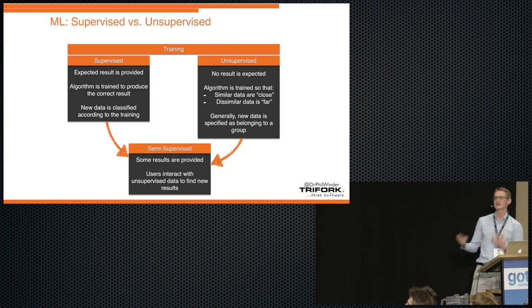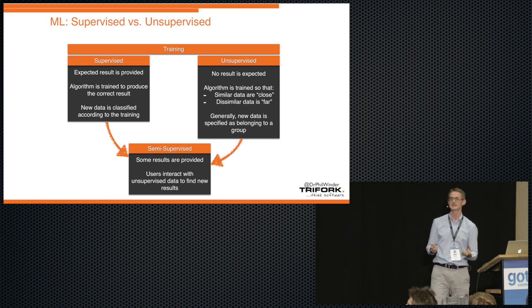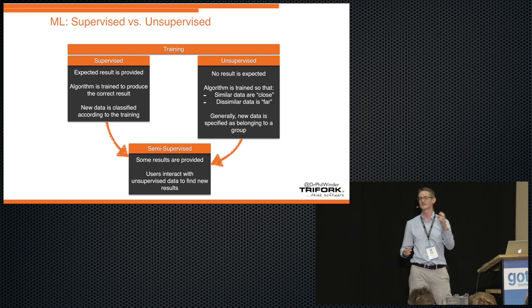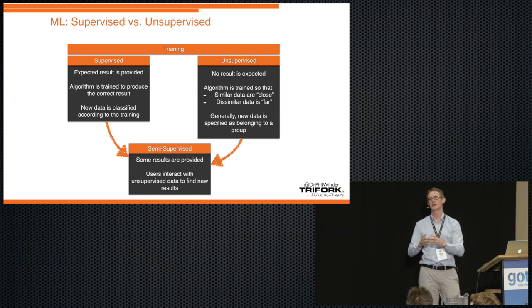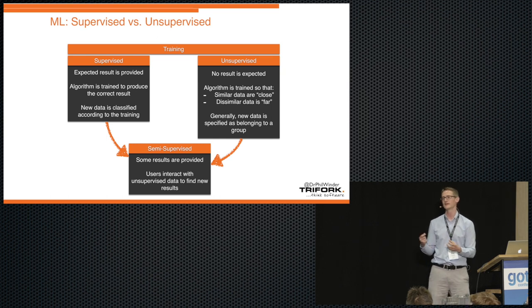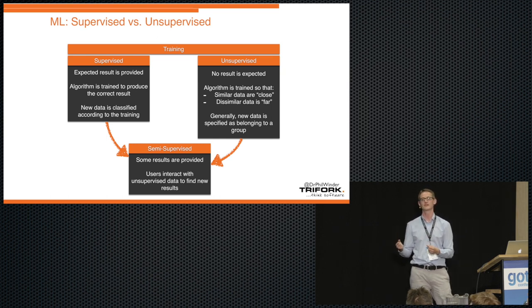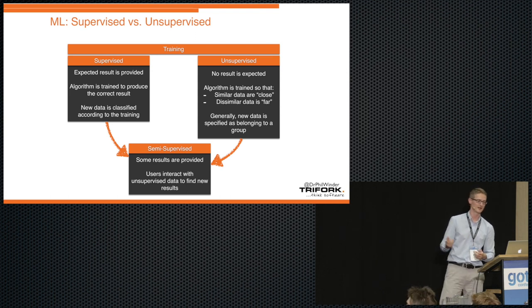We've also got different types of learning as well. Learning is the key thing that's really enabled deep learning to come to the forefront, is that the new training techniques that have been developed are so much more powerful than they were in the past. Training can be split into supervised and unsupervised learning. Supervised learning is where you have an expected result, so you say it's labeled, so you say that this raw data is supposed to belong to class A. This is supposed to be the number one, or this person is fraudulent.